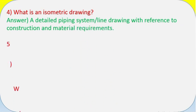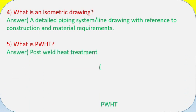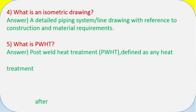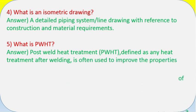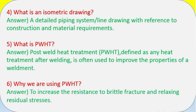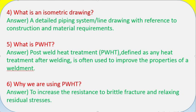Question 4: What is an isometric drawing? Answer: A detailed piping system/line drawing with reference to construction and material requirements.